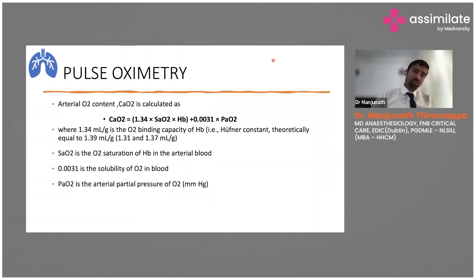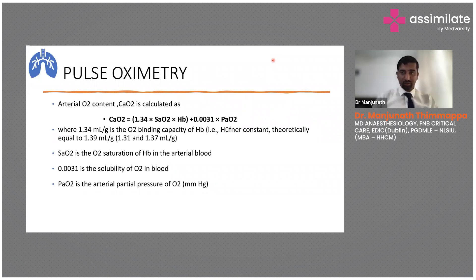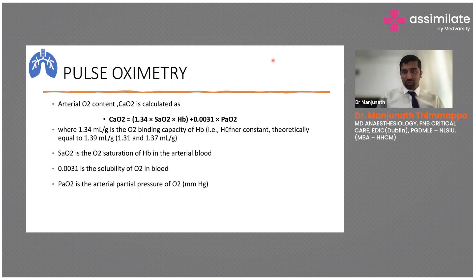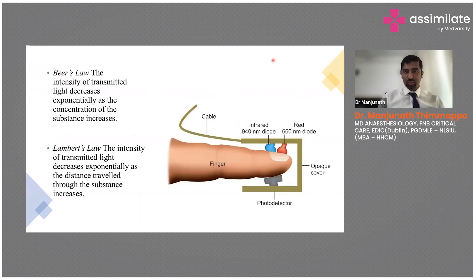The pulse oximeter is one of the most important devices, present in almost all centers. After the pandemic, even homes have pulse oximeters, and people keep checking SpO2 levels. The arterial oxygen content formula involves 1.34 multiplied by saturation and hemoglobin. You may also need arterial blood gas analysis to see PaO2 levels in addition to SpO2, to assess arterial oxygen content.